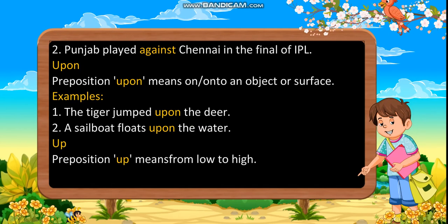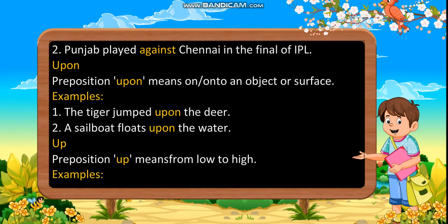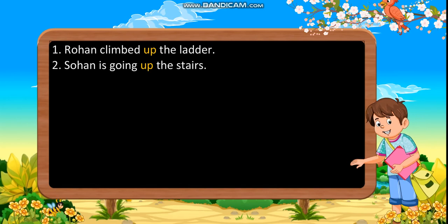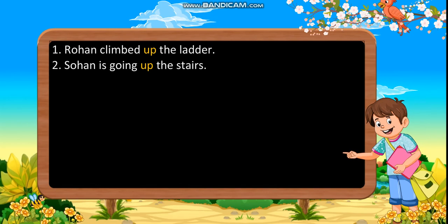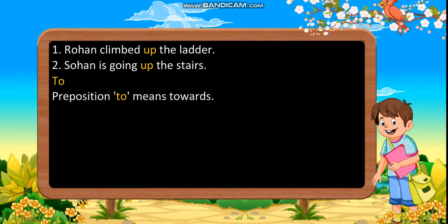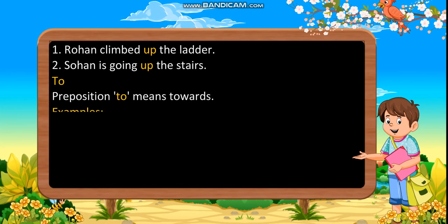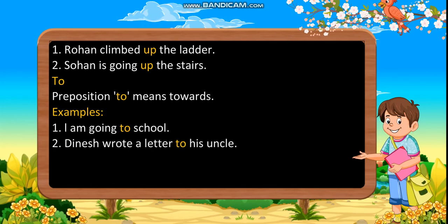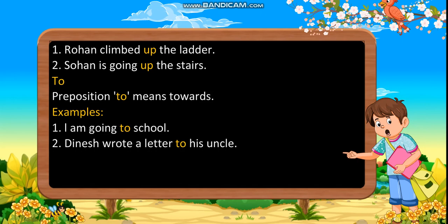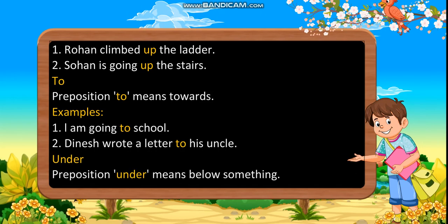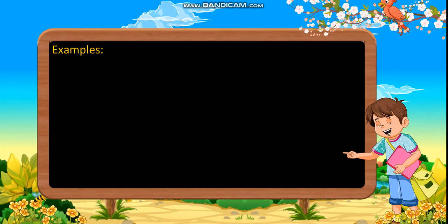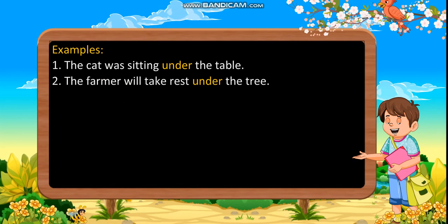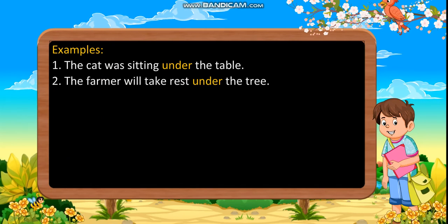Up: preposition up means from low to high. Examples: first, Rohan climbed up the ladder. Second, Sohan is going up the stairs. To: preposition to means towards. Examples: first, I am going to school. Second, Dinesh wrote a letter to his uncle. Under: preposition under means below something. Examples: first, the cat was sitting under the table. Second, the farmer will take rest under the tree.